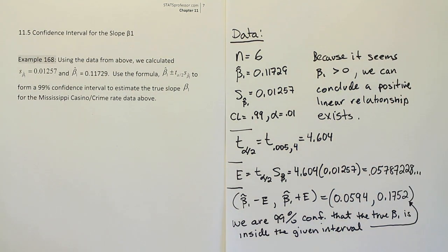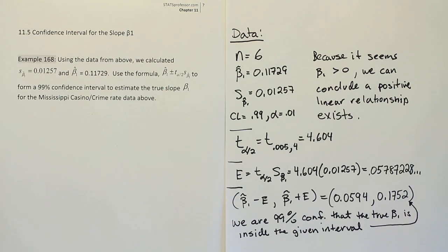Again, it means that as one variable moves, the other one moves in the same direction. So if we have a higher number of casino employees, we have a higher crime rate. If we have a lower number of casino employees, we have a lower crime rate.